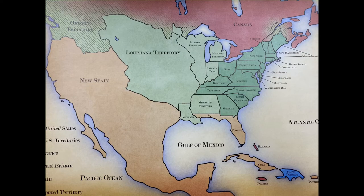For many years after the Revolutionary War, the United States grew larger and wealthier. New states such as Vermont, Kentucky, Tennessee, Ohio, and Louisiana were added, and new territories were also settled. In 1803, President Thomas Jefferson purchased the Louisiana Territory from France. This purchase more than doubled the size of the United States.